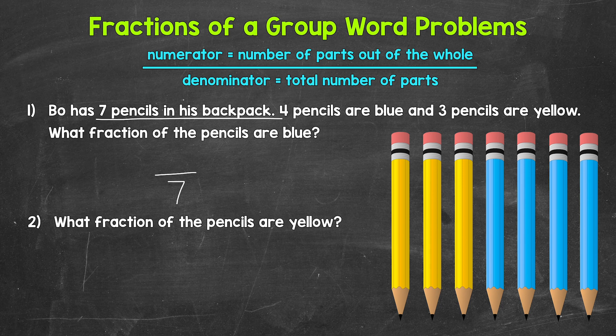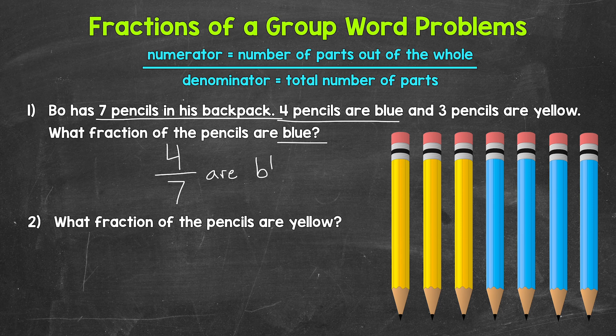Each one of those pencils is an equal part of the whole group. Now we need the numerator — that's the number of parts out of the whole that we are interested in, the number of parts we are talking about. We want what fraction of the pencils are blue, so the number of blue pencils is our numerator. Bo has four pencils that are blue, so four is our numerator. Four out of the seven pencils are blue — our fraction is four sevenths.